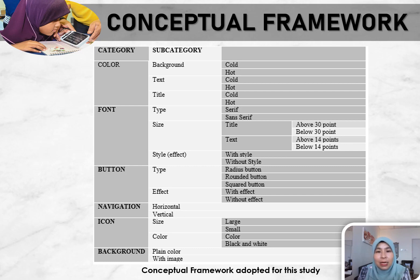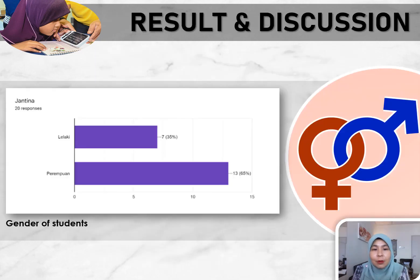The six main categories are colour, font, button, navigation, icon, and background. The questions developed for this study are based on the conceptual framework presented in the slide. Moving into results and discussion: based on the data collected, the results have been thoroughly analysed. As mentioned, 20 respondents were involved in this study, prudently selected to ensure the data collected are precise and represent the idea of the study.